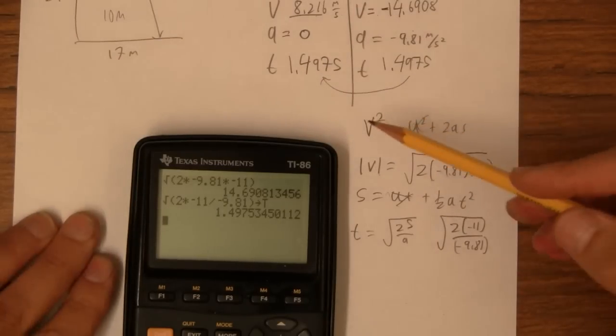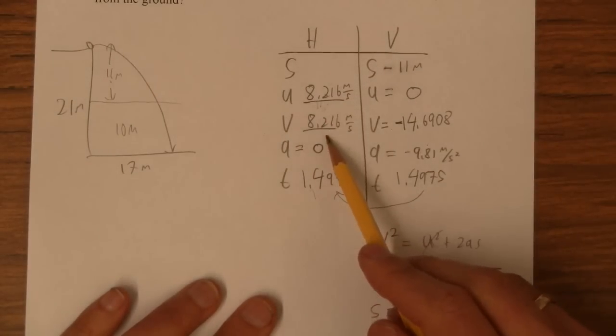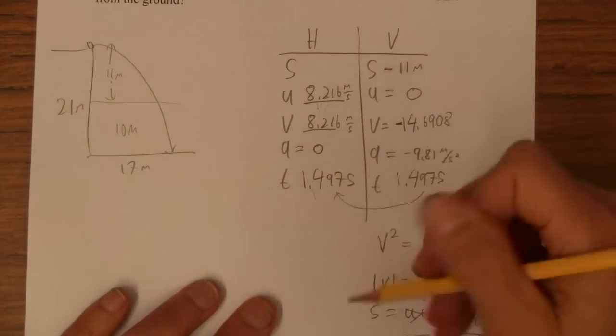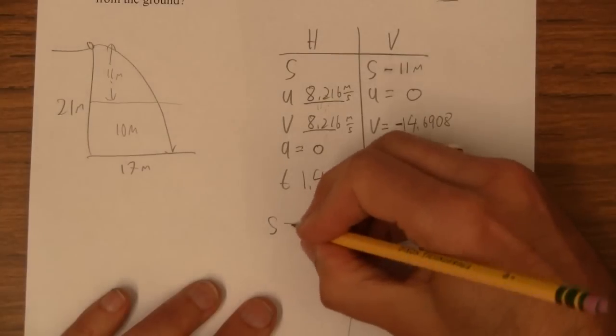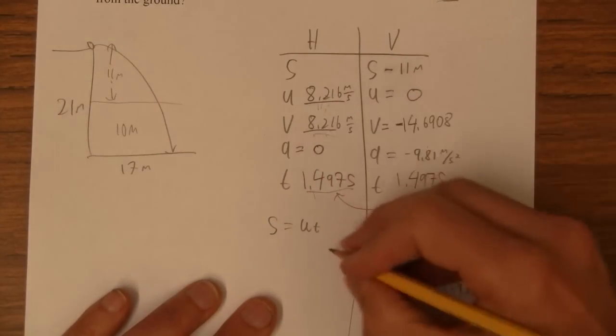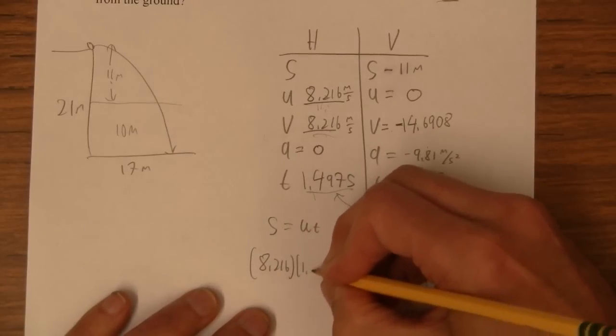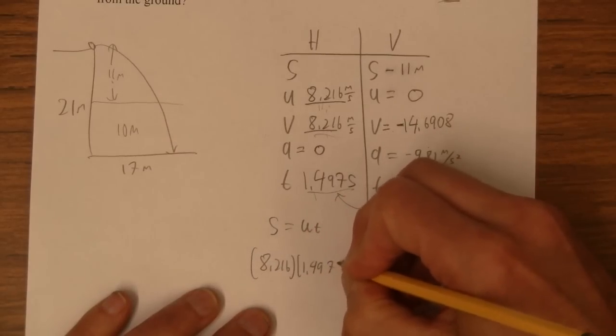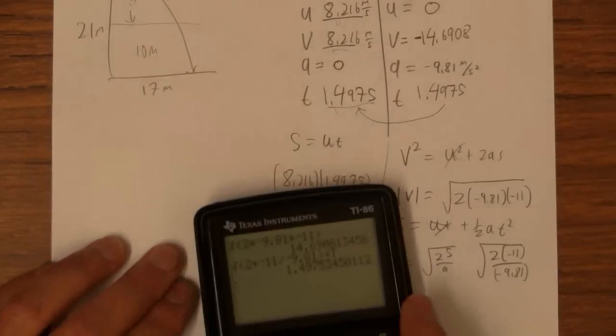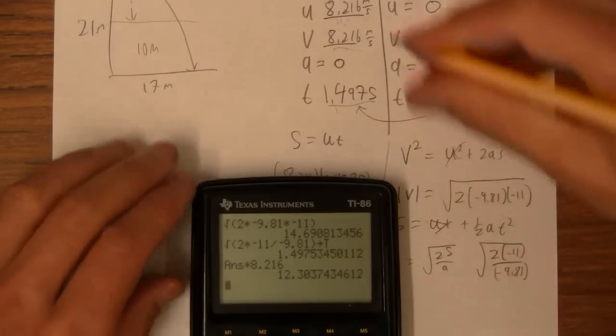And now we're all set on this side here. We've got the time. We've got the initial velocity and the final. So we can use the only formula we ever use. S equals ut. So it's going to be this guy times this guy. It's going to be 8.216 times 1.4975. I'm just going to take that value that's in my calculator and go times 8.216. And I get 12.304.